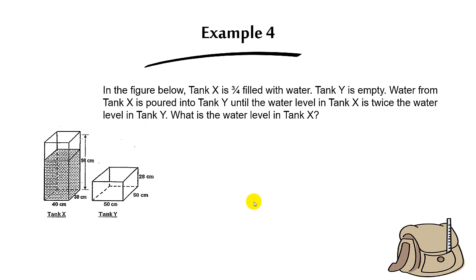Let's look at example four. In the figure below, tank X is three-quarters full of water — in other words, the volume of water is three units and the total volume is four units — while tank Y is empty. Water from tank X is poured into tank Y until the water level in tank X is twice the water level in tank Y. The water from tank X is poured into Y, so the water level in X will drop.